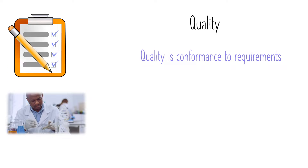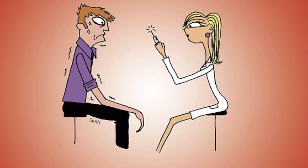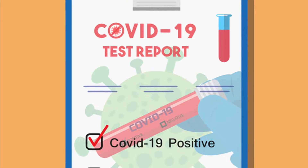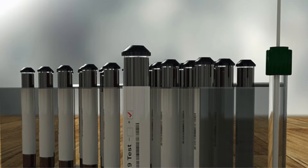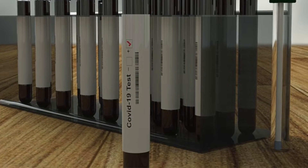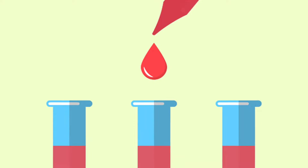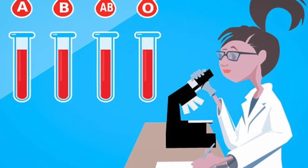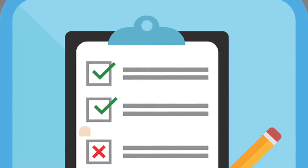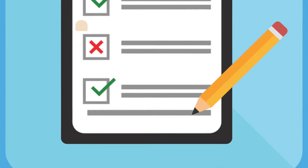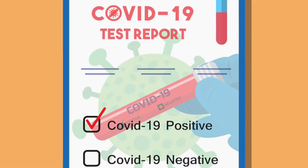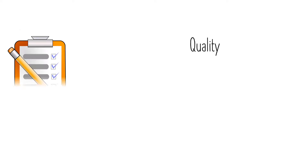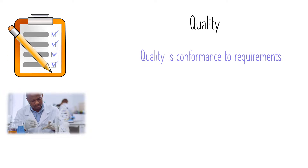There are many operations that have to be executed in order to get a test from a patient to the results given to the clinician. All the operations that occur in a laboratory have to be reliable and the results have to be timely in order to make it useful for the clinician and in a public health setting or emergency. To ensure that results are reliable, timely, and accurate, there's a quality framework within which any laboratory has to operate.